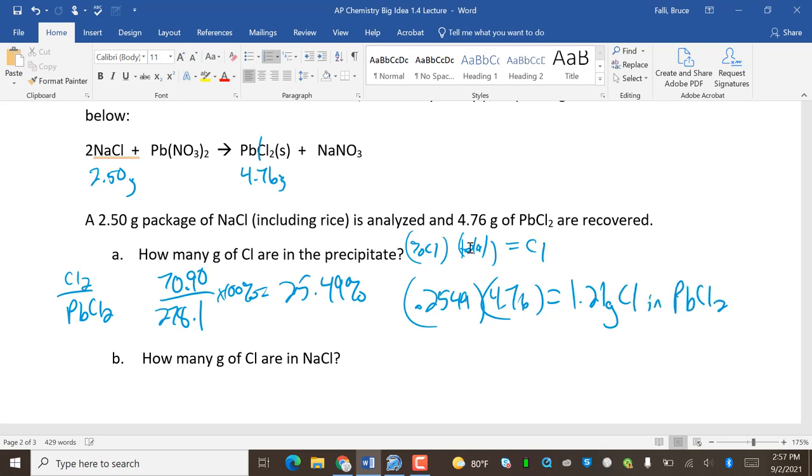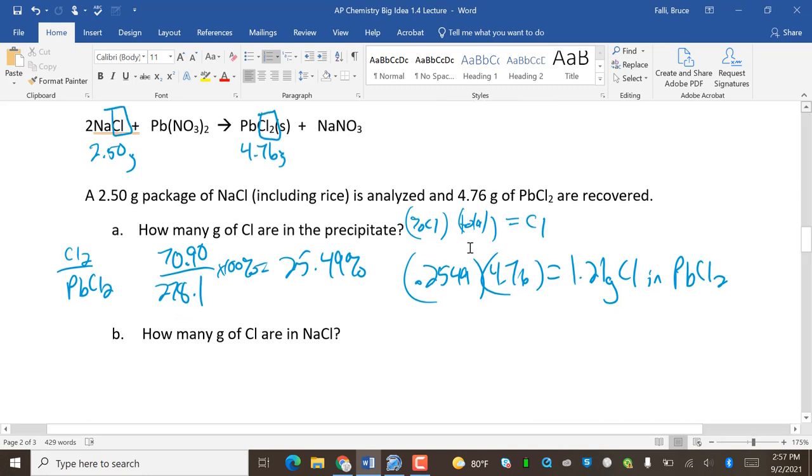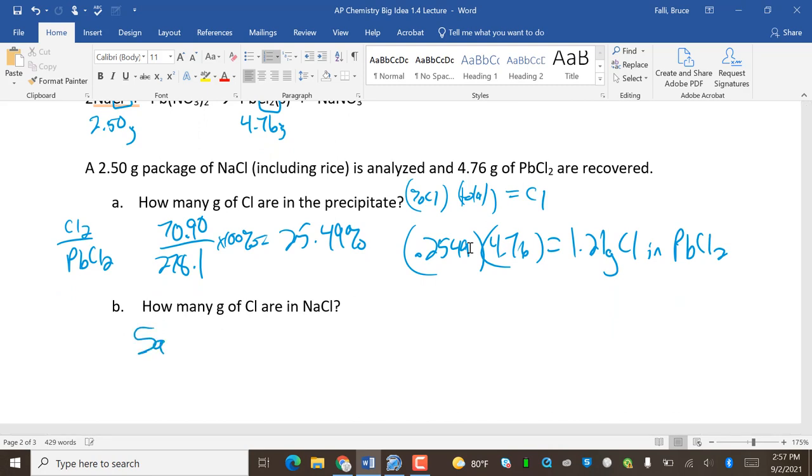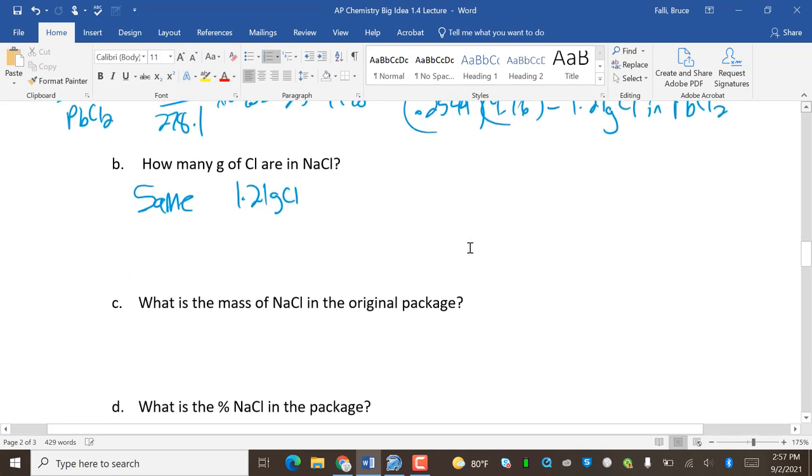So I have 1.21 grams of Cl in PbCl2. That's going to equal, that chlorine is going to equal the chlorine in here. So if that's the case, how many grams of chlorine are in NaCl? Same, same. 1.21 grams of chlorine. What is the mass of NaCl in the original package? Well, what I'm going to do here is I'm going to take my grams of chlorine and turn it into moles of chlorine. And the moles of chlorine are going to equal my moles of NaCl because Cl to NaCl is 1 to 1. And then moles of NaCl, and then I turn that into grams of NaCl.